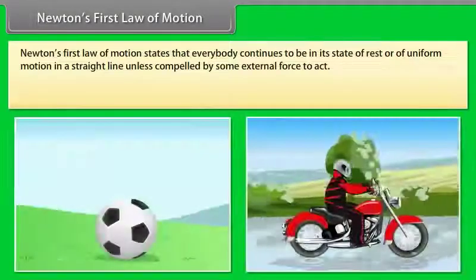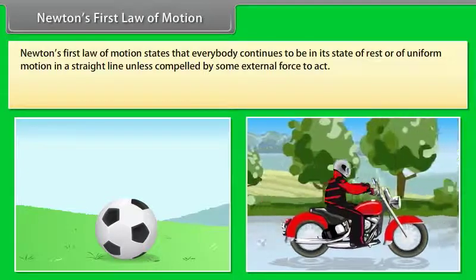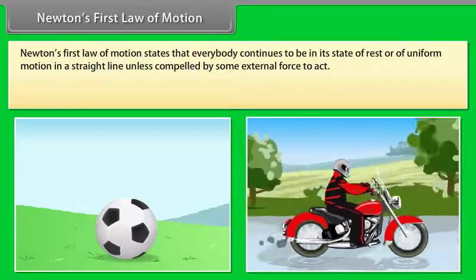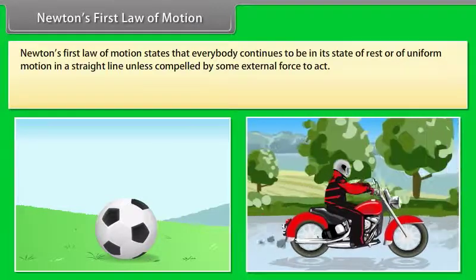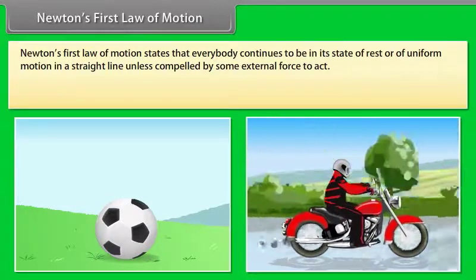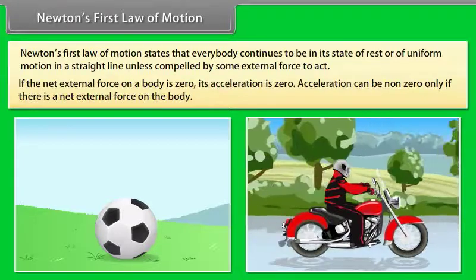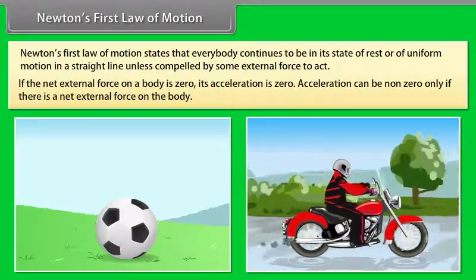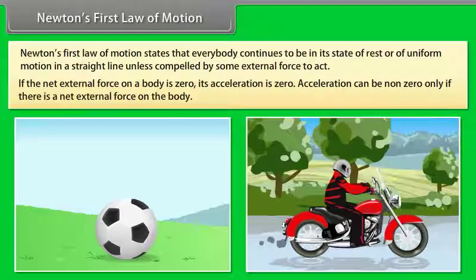Newton's first law of motion states that every body continues to be in its state of rest or of uniform motion in a straight line unless compelled by some external force to act. If the net external force on a body is zero, its acceleration is zero. Acceleration can be non-zero only if there is a net external force on the body.